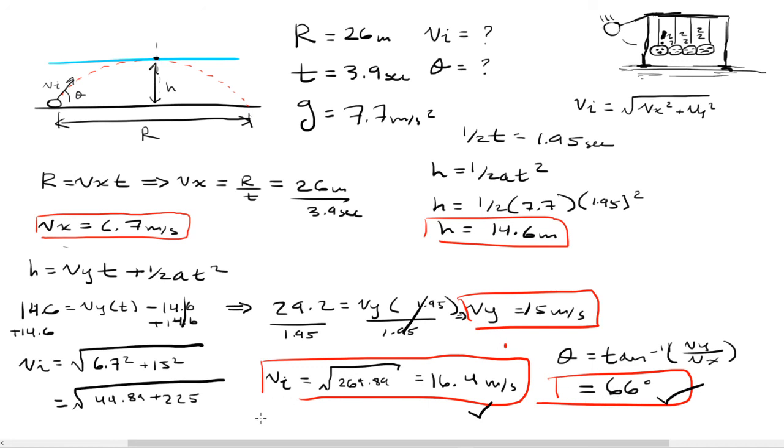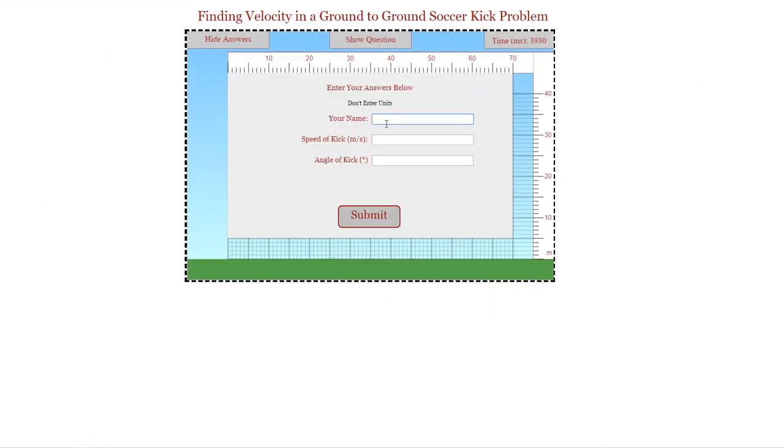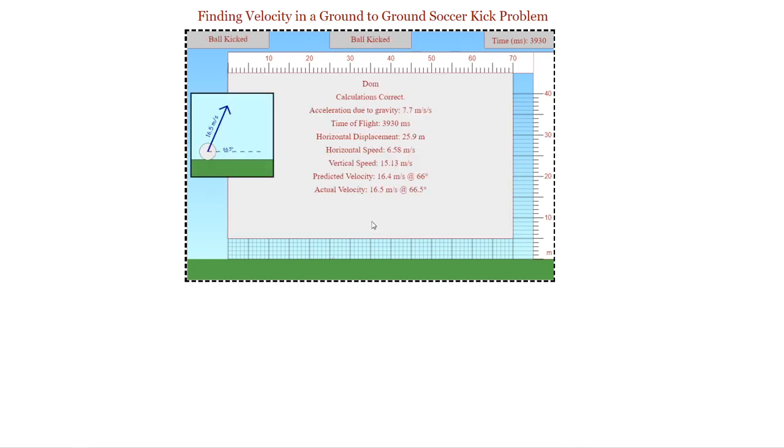So let's go ahead and plug it into the website and see how we did. So go ahead and enter your name. Speed of the kick we said was 16.4, and the angle was 66 degrees. And great, we can see that our calculations here are correct. Hope your calculations are correct as well. Feel free to email me about any questions you have. I know that one half t, I went on a little bit of a tangent there, so that could have been a little bit confusing. So just feel free to shoot me any questions you have. I'll be glad to answer them. Hope to see you on the next example, and thank you for viewing.